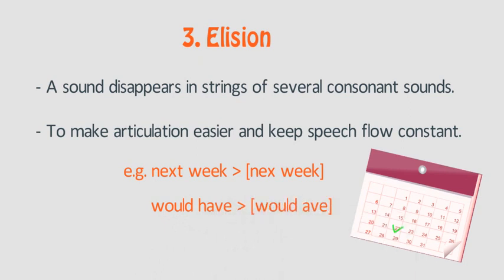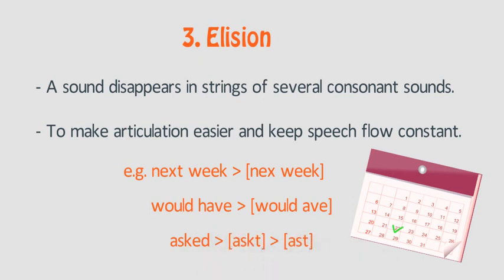we will delete the first aspirated sound in 'have' and say 'would have,' 'would have.' One last example of elision: take the simple past tense of 'ask' — 'asked.' There are three consonant sounds in a row; however, in fluent speech we can drop a sound and say 'asked,' so it's easier to articulate the word. 'Asked.'